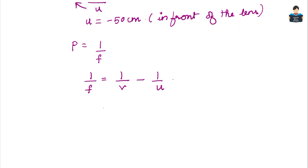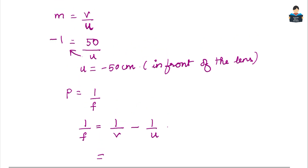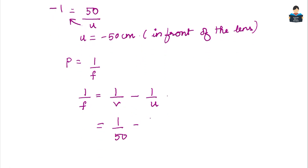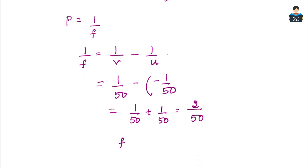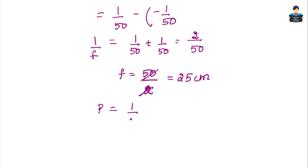Substituting values: 1/f = 1/50 minus (1/minus 50) = 1/50 plus 1/50 = 2/50. Therefore f = 50/2 = 25 cm.